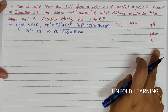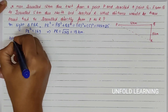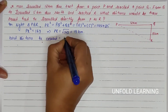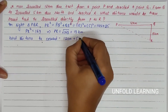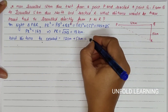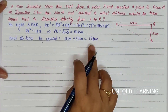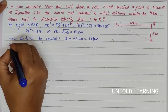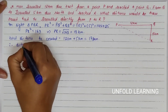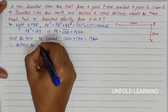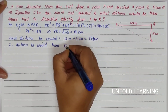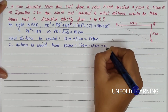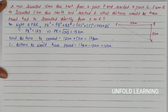The shortest distance PR is 13 km. But the total distance he covered is 12 km plus 5 km, that is 17 km. The shortest distance is 13 km. Therefore, the distance he would have saved will be 17 km minus 13 km, that is 4 km.